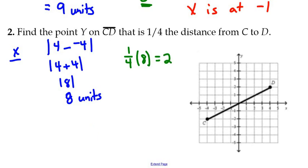A fourth of 8 is 2. And then to find the x coordinate, we'll start at C, starts at negative 4, add 2, and you'll get negative 2. So this value here, negative 2, is what the x component will be for the coordinate Y. I'm going to put this right up here, that Y has coordinate negative 2. And we're going to fill in the rest of that in a moment here.